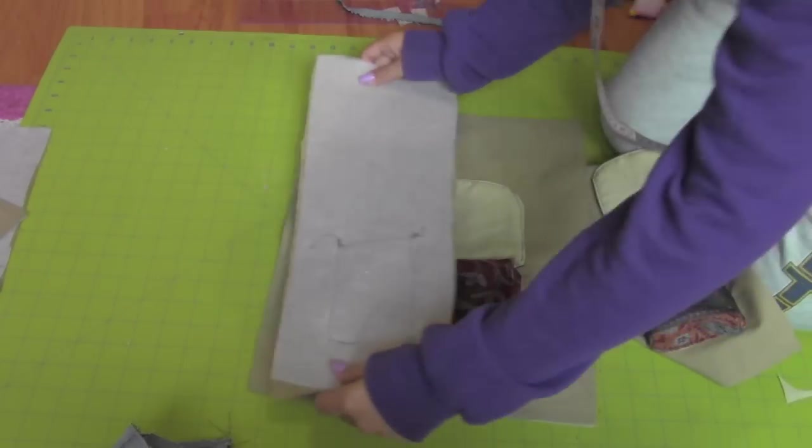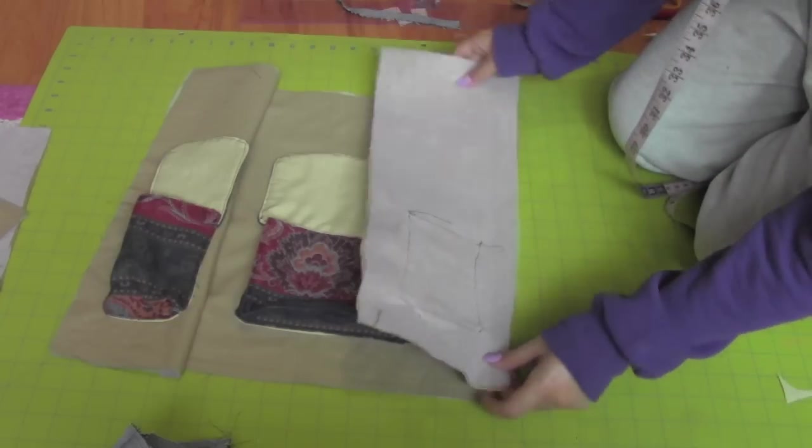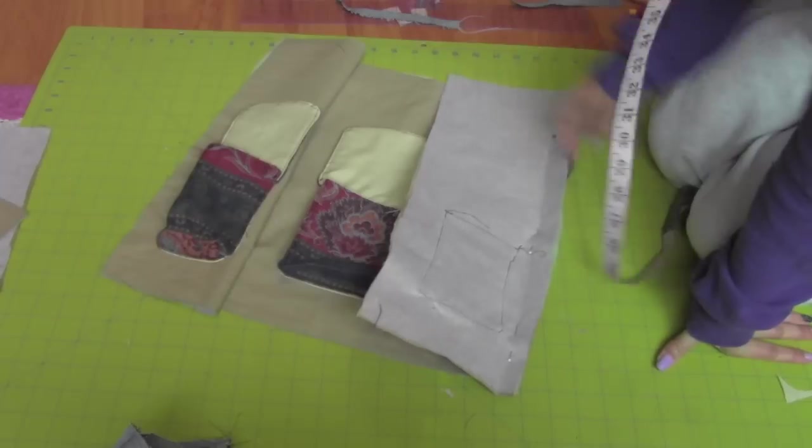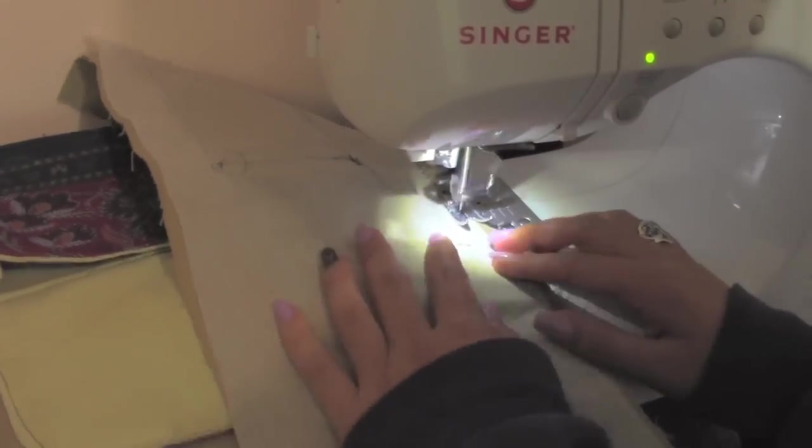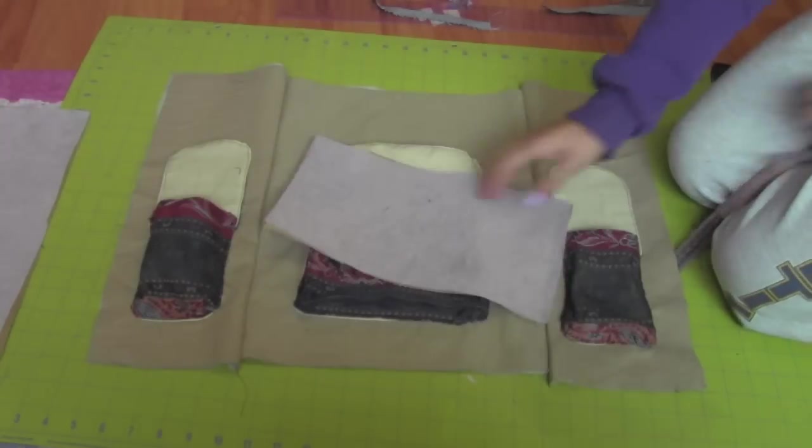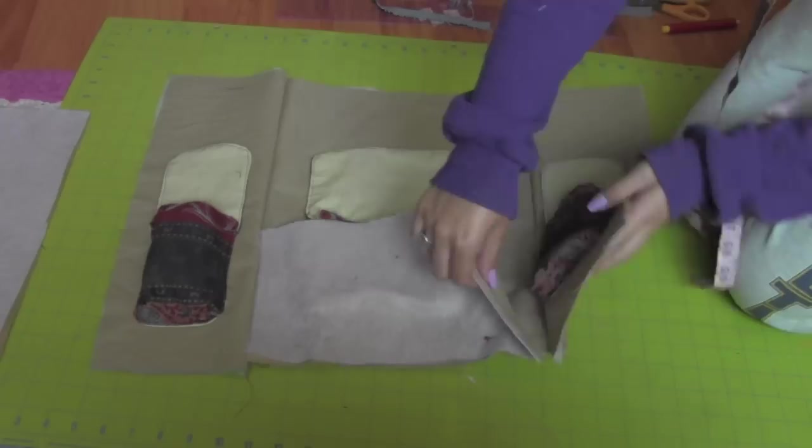Place the exterior pieces right sides together and sew. Use a straight stitch and don't forget to lock your stitches. Do the same to the bottom as well.